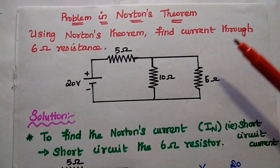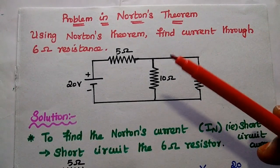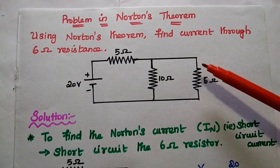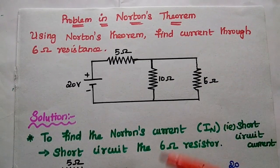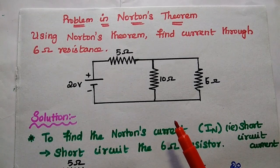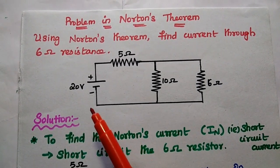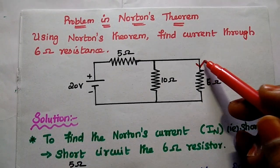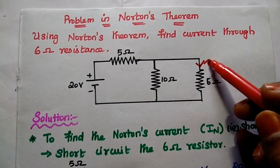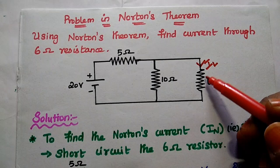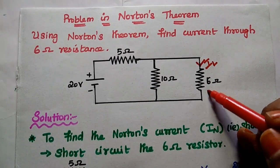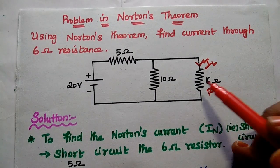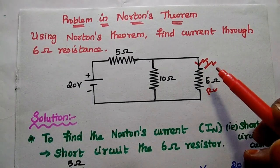Let's solve one problem using Natan's theorem. Using Natan's theorem, find the current through the 6 Ohm resistance in the given circuit. The circuit has a voltage source of 20 volts. We are going to find out the current through this 6 Ohm resistor, which we consider as the load resistor. We will find the load current IL using Natan's theorem.